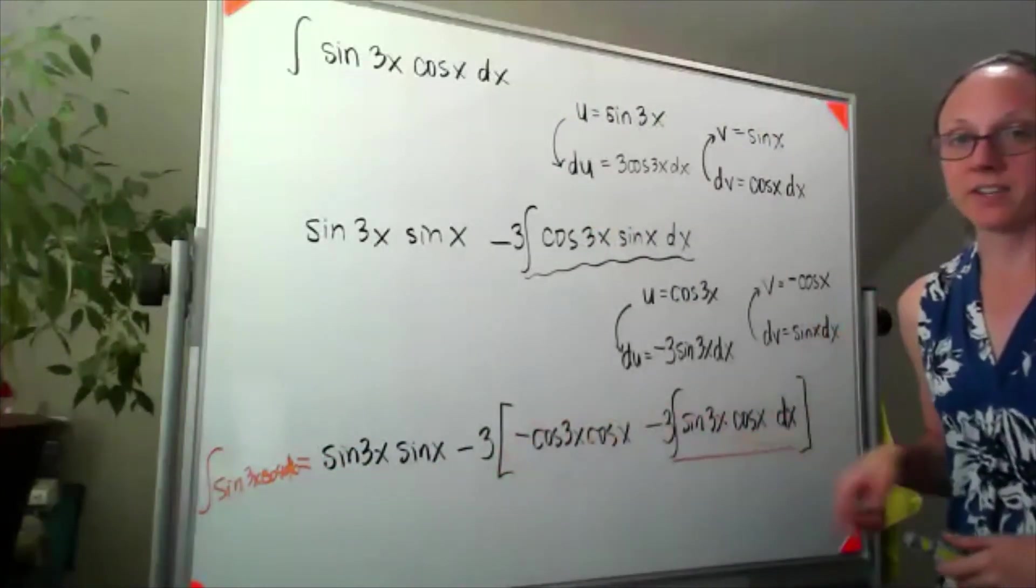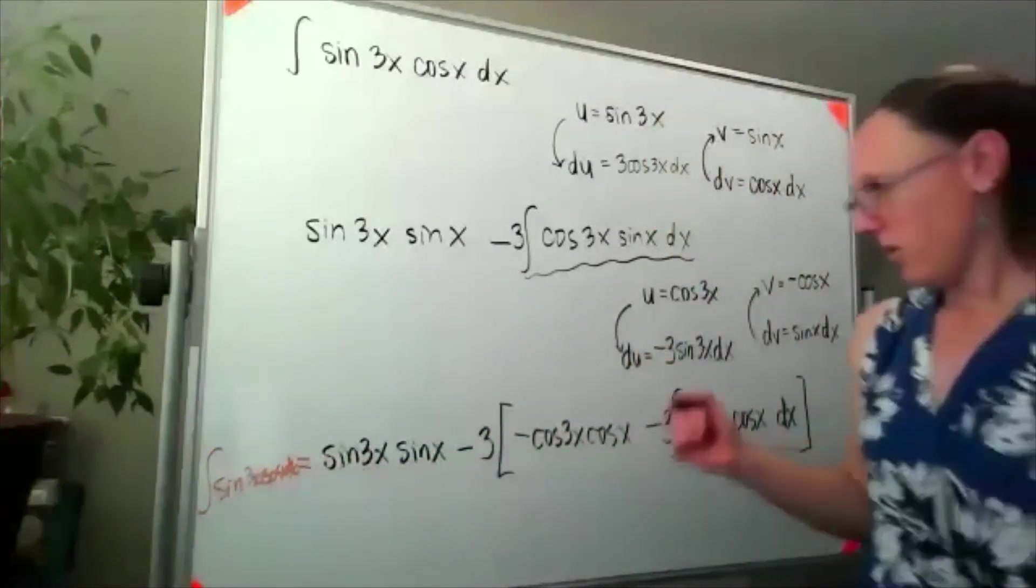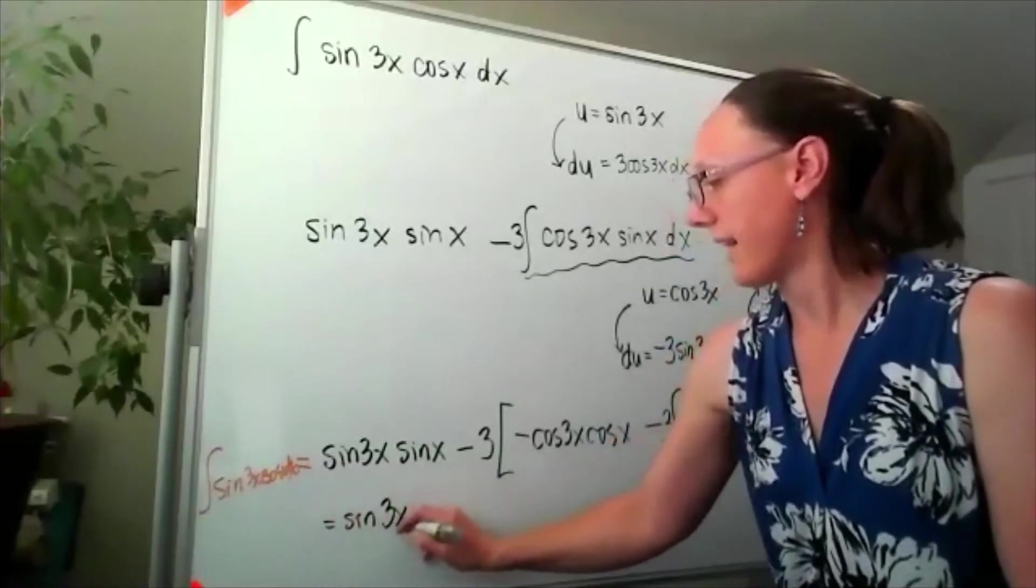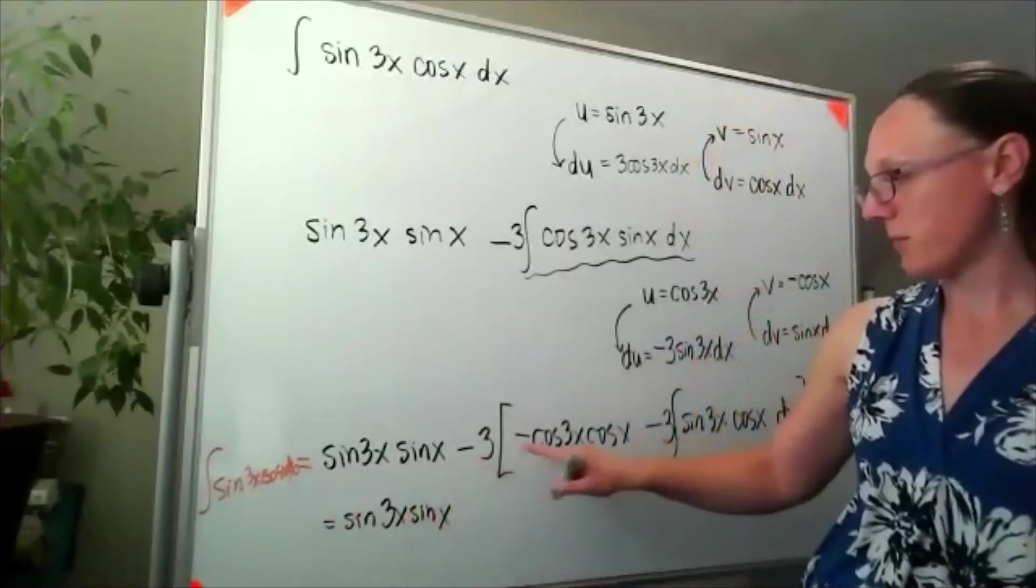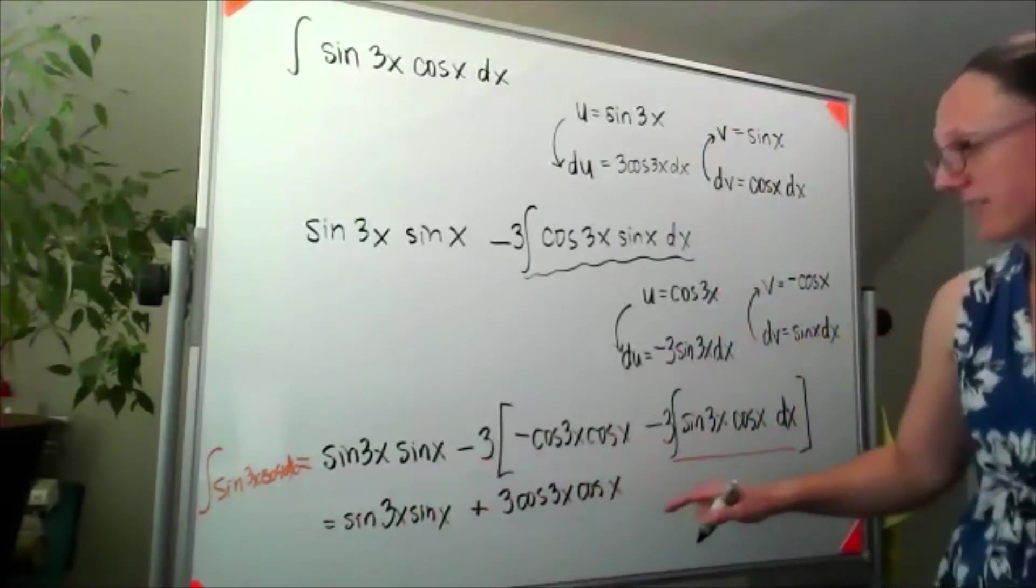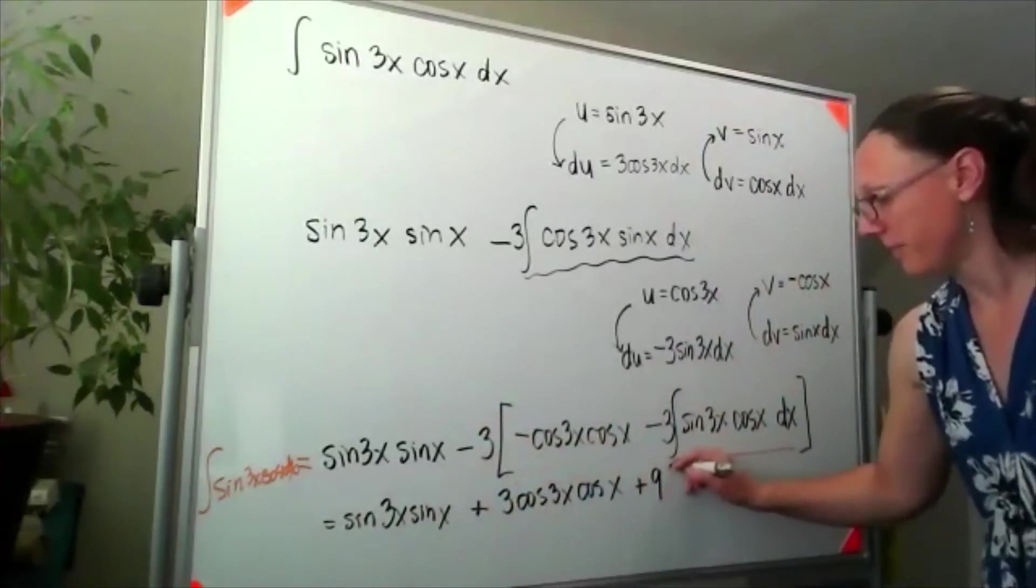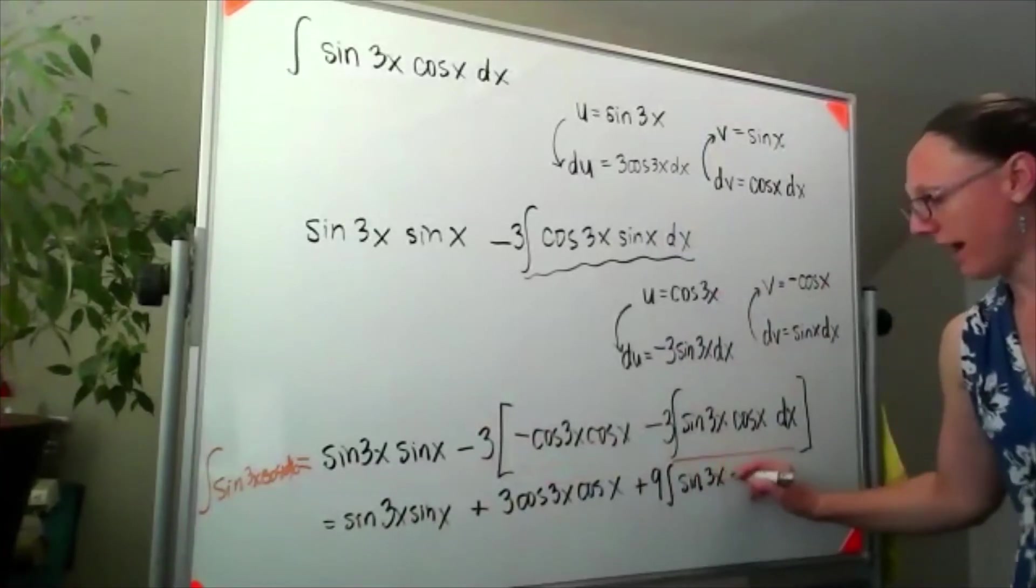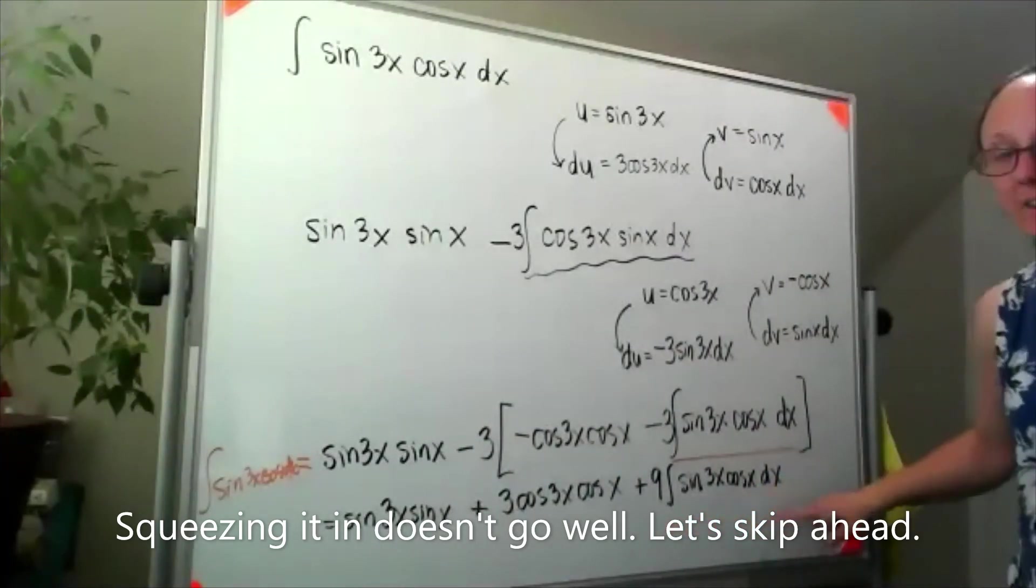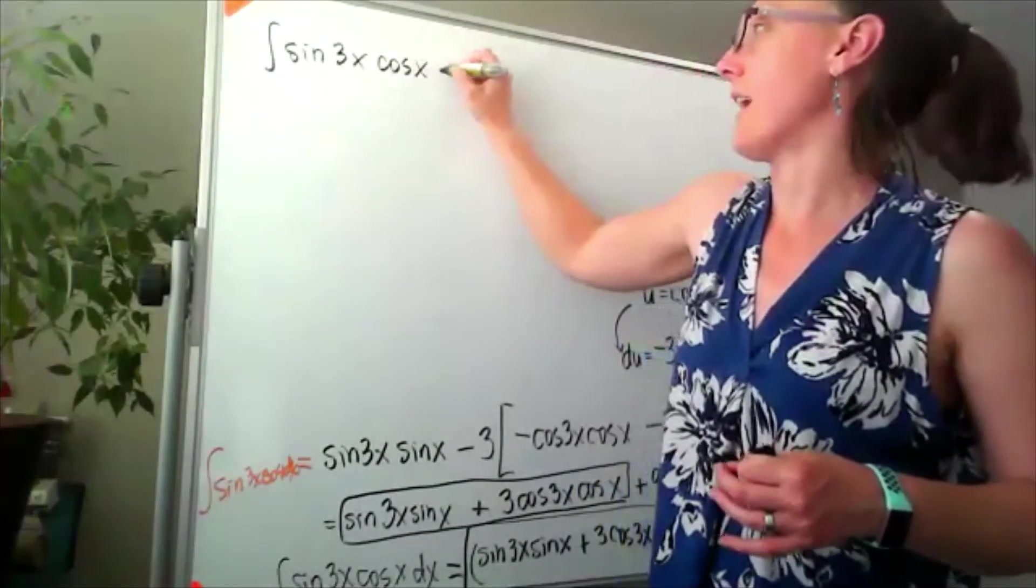So I'm going to want to distribute that minus 3 through, take this whole piece, move it to the other side. I think I can try to squeeze it in. So I've got sine 3x sine of x - minus a minus, we'll make that plus - 3 cosine 3x cosine x. That negative 3 times another negative would be plus 9 sine 3x cosine x dx, which means I'm going to subtract 9 of these to the other side as sine 3x cosine x dx.